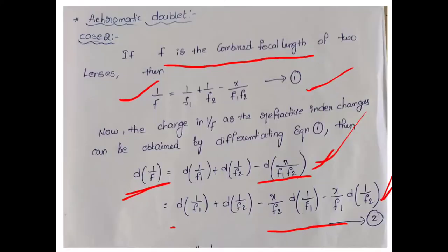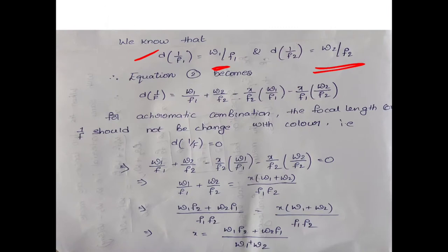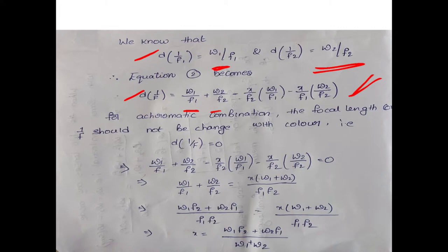After substituting the dispersive power values, equation 2 becomes: d(1/F) = ω1/f1 + ω2/f2 − (x/f2)·(ω1/f1) − (x/f1)·(ω2/f2). For an achromatic combination, the focal length must be independent of refractive index — meaning the focal length is constant and its differentiation equals zero. So d(1/F) = 0.